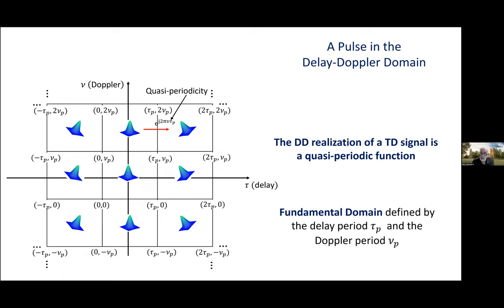So, tau_p is the delay period, nu_p is the Doppler period, and the fundamental period is this box of width tau_p and height nu_p.